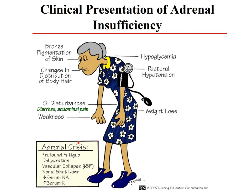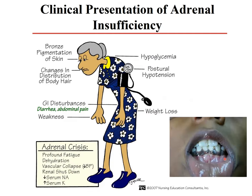Adrenal crisis is associated with dehydration, vascular collapse, renal shutdown, and characteristic electrolyte changes: sodium decreases while potassium increases. Not only the skin but the buccal mucosa can be pigmented — even in dark-skinned individuals, a darker gum or mucosa may be observed.